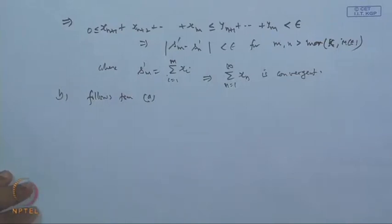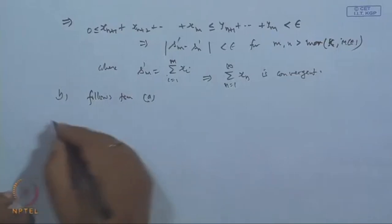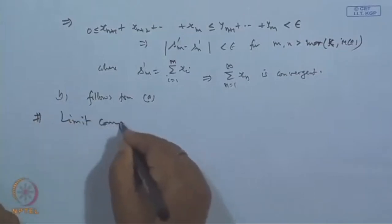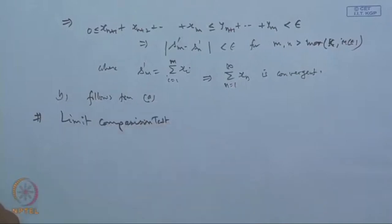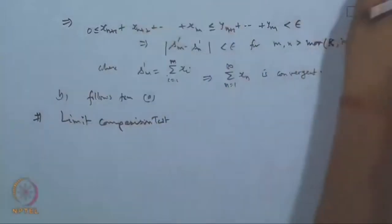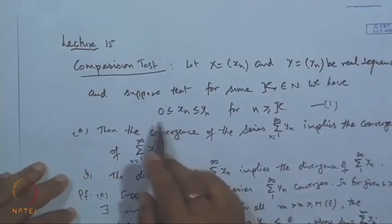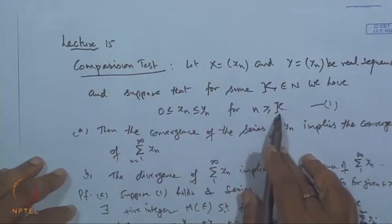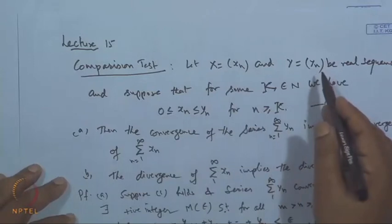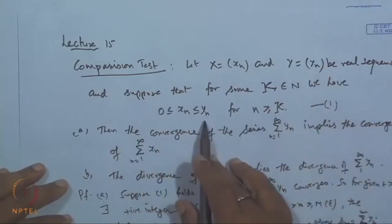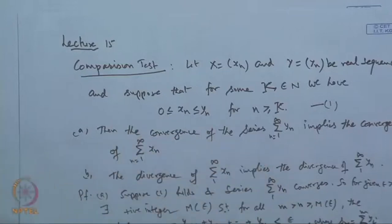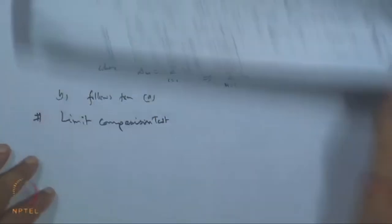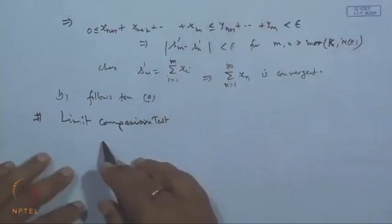Another test is the limit comparison test, which is a modified version of the comparison test. It is often very difficult to establish the inequality 0 ≤ x_n ≤ y_n for all n or after a certain stage. So a simpler form is given, known as the limit comparison test.